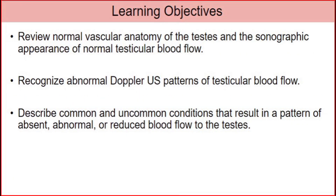Learning objectives: 1. Review normal vascular anatomy of the testes and the sonographic appearance of normal testicular blood flow. 2. Recognize abnormal Doppler ultrasound patterns of testicular blood flow. 3. Describe common and uncommon conditions that result in a pattern of absent, abnormal, or reduced blood flow to the testes. This presentation provides a case-based review of Doppler flow abnormalities in the testes.